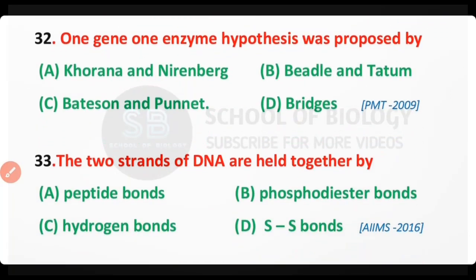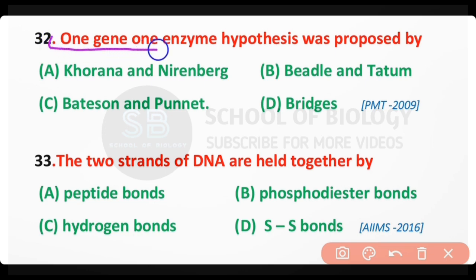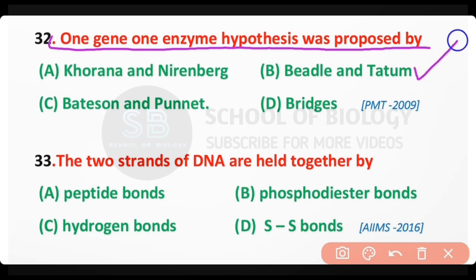Question number 32: The one gene, one enzyme hypothesis was put forward by — Khurana and Nirenberg, Beadle and Tatum, Batson and Punnett, or Bridges? The correct answer is option B: Beadle and Tatum proposed the one gene, one enzyme hypothesis.